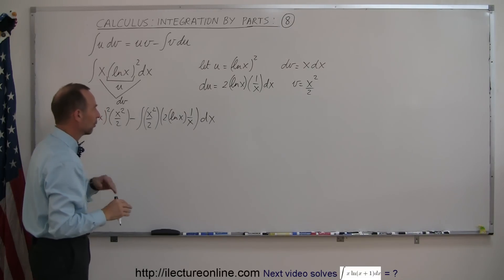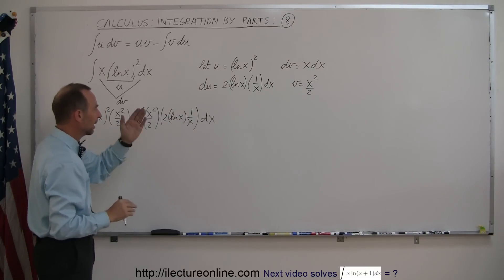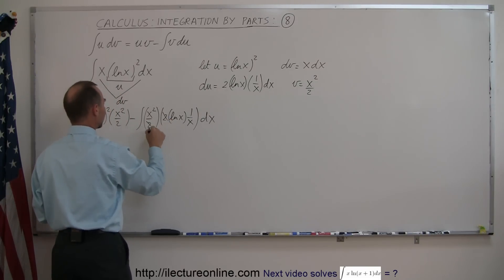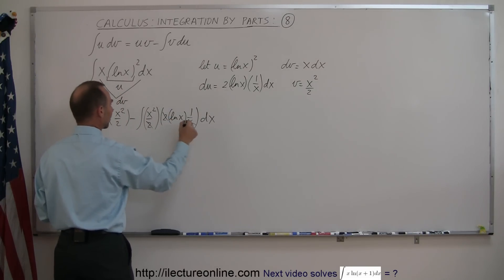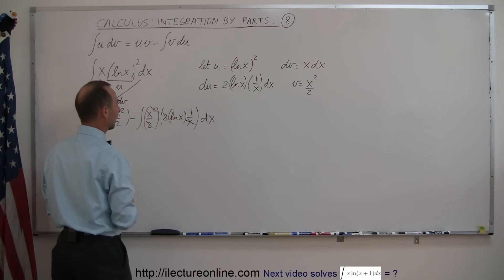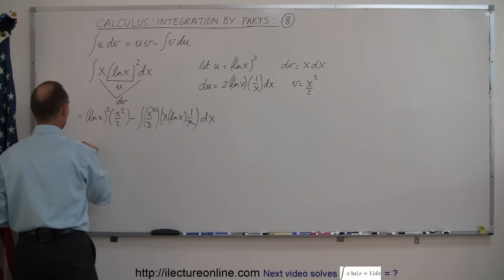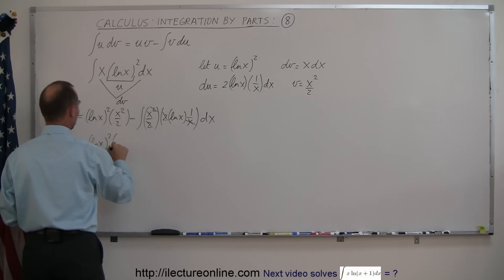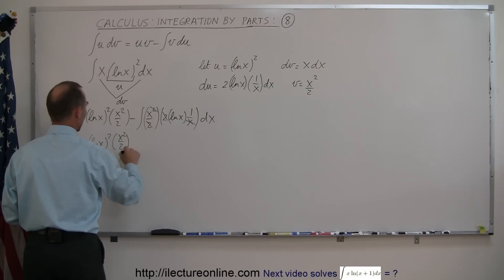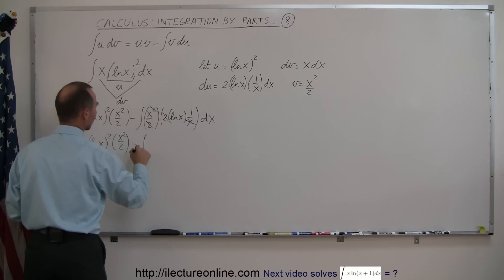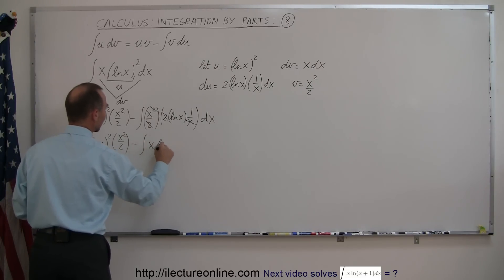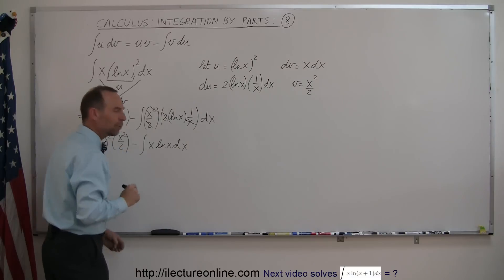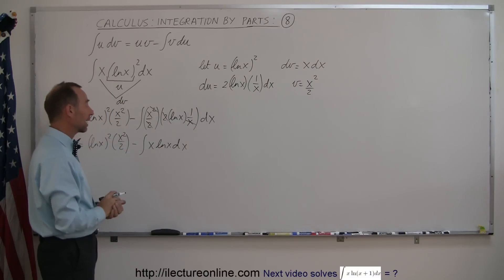So it looks like we're on the right track. One more time, and probably the natural log of x disappears. This 2 cancels out this 2, this x cancels out this x, and this then becomes equal to the natural log of x quantity squared times x squared over 2, minus the integral of x times the natural log of x dx. That looks like one we've done before, but let's do it again.